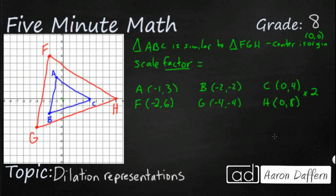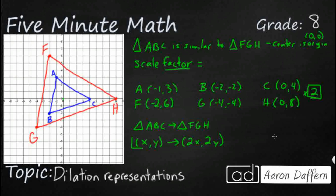So if we want to get from triangle ABC to triangle FGH, we're going to let (X, Y) represent any point in that first triangle — any point on any of the lines in ABC. What we're going to do is dilate it, using that arrow to show the dilation. The scale factor is 2, so we write: (X, Y) → (2X, 2Y). If we want to take any point in the ABC triangle, we just double it — multiply by 2. And that's how you represent dilations algebraically.